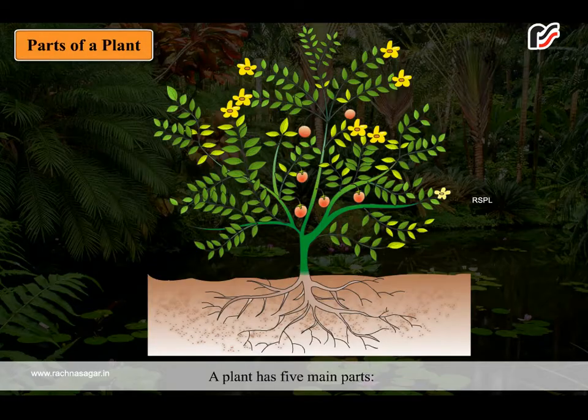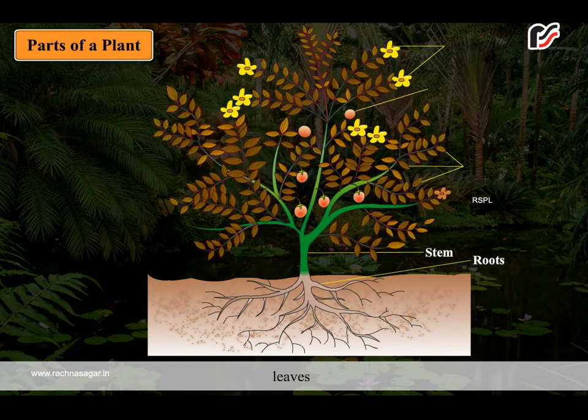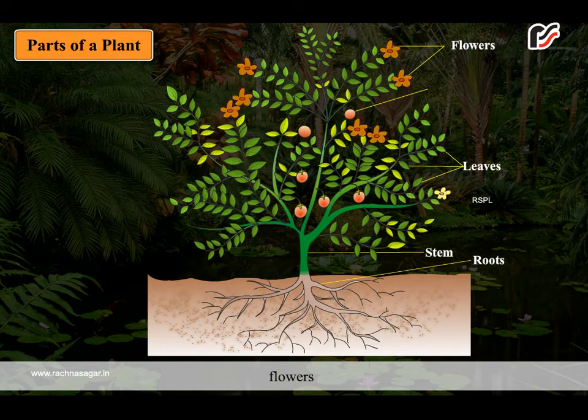A plant has five main parts: a root, stem, leaves, flowers and fruits.